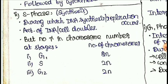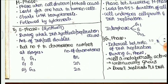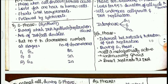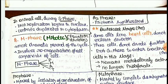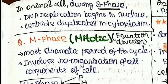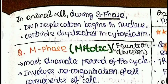S phase is the synthesis phase — DNA replication occurs here. The number of chromosomes does not increase, but DNA content doubles as replication occurs. In animal cells during S phase, DNA replication begins in the nucleus and centrioles duplicate in the cytoplasm.